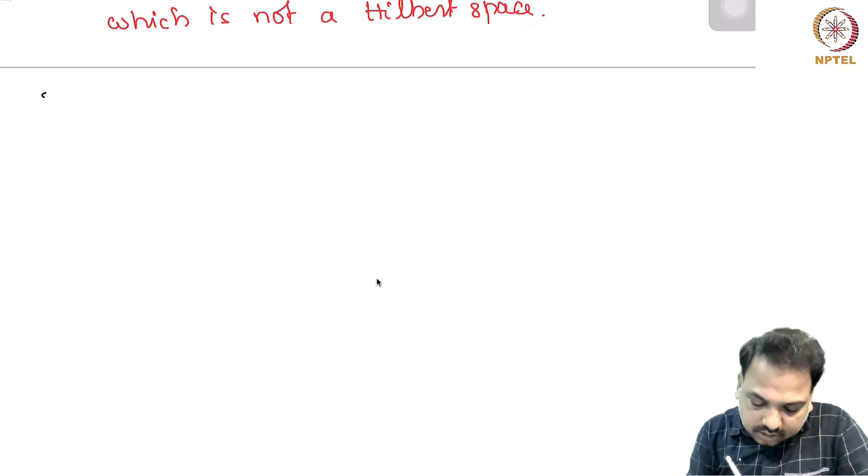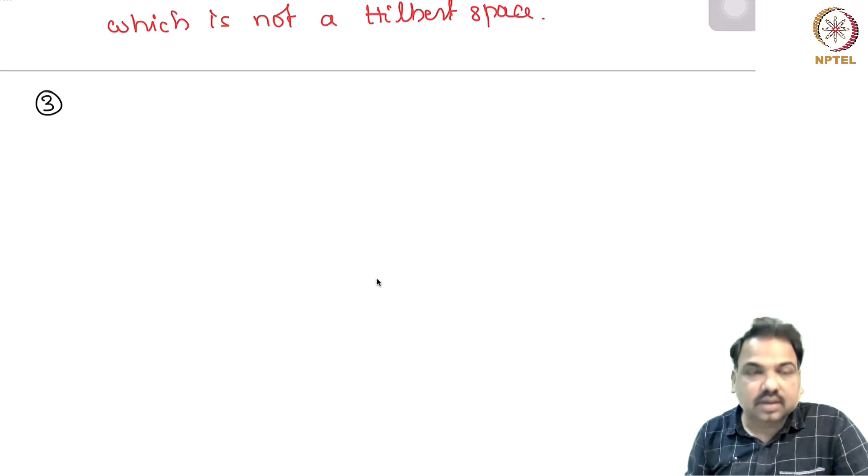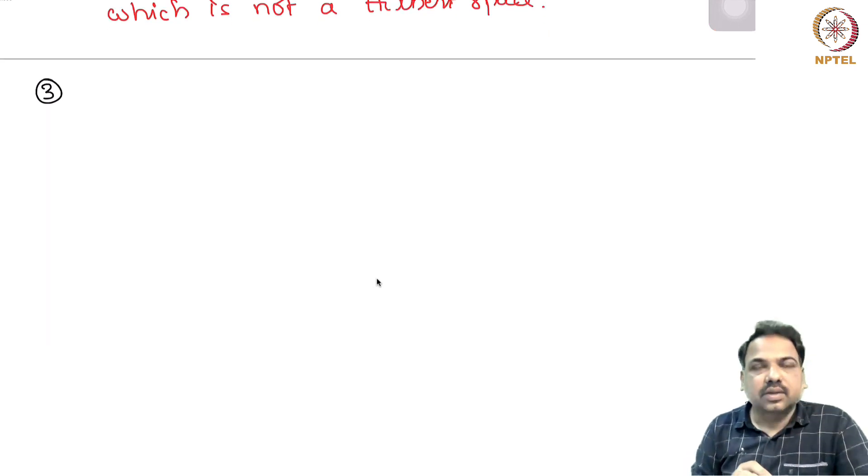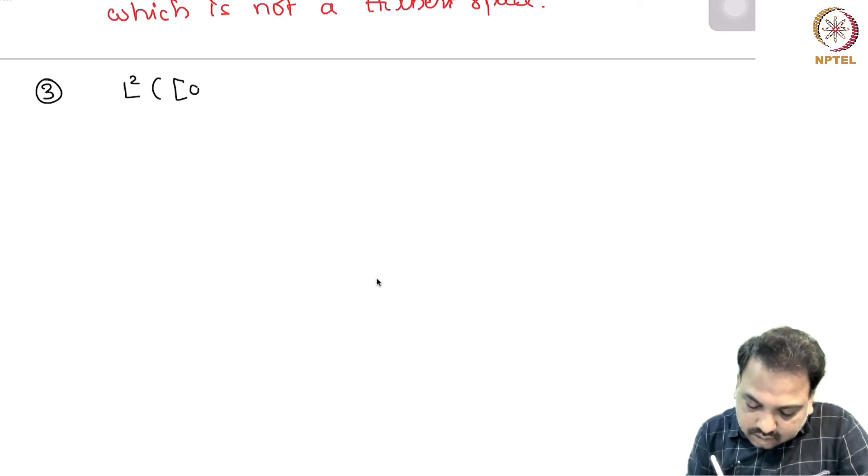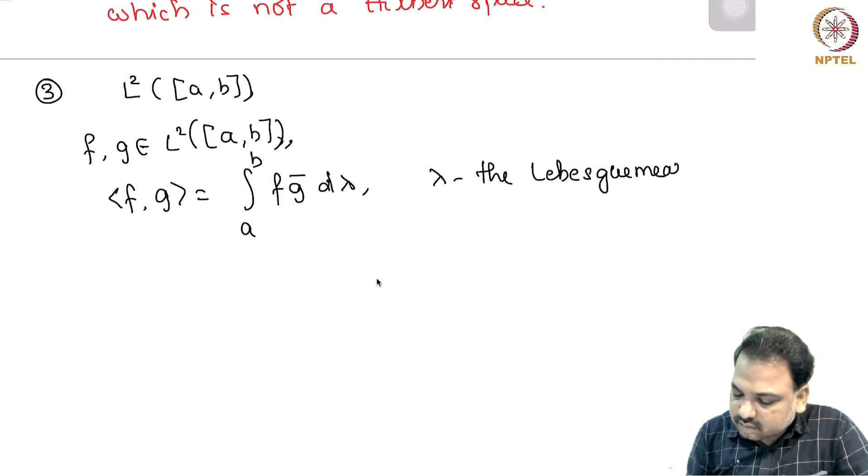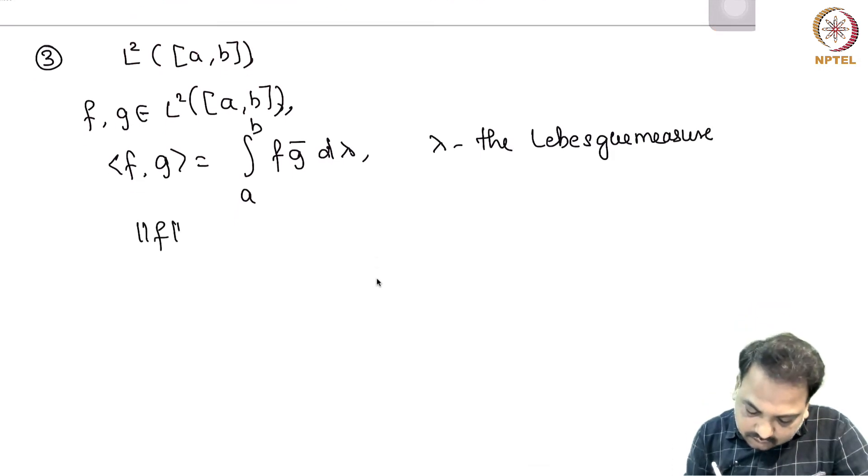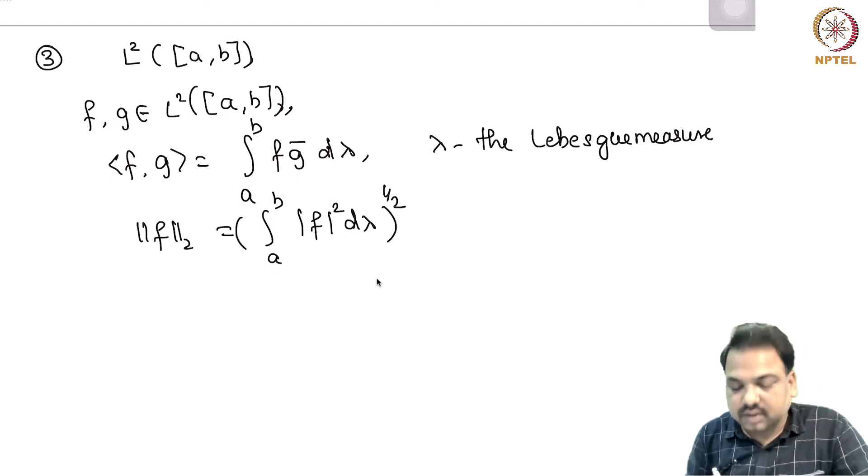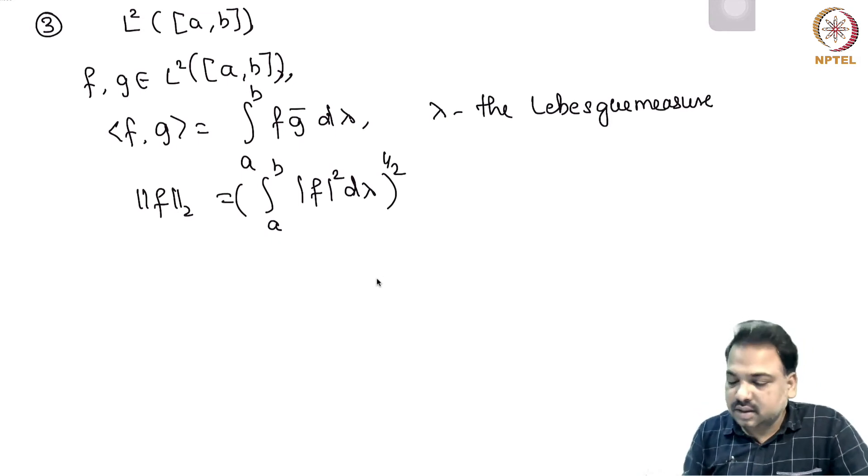Let us look at one more example, which is a generalization of all these examples. In particular, let us look at L^2[a,b]. So if we take f, g from L^2[a,b], we have defined inner product of f with g as integral from a to b of fg dλ, where λ is the Lebesgue measure. And the induced norm is (integral from a to b of |f|^2 dλ)^(1/2). You can show that this is also a complete inner product space. Hence, it is a Hilbert space.